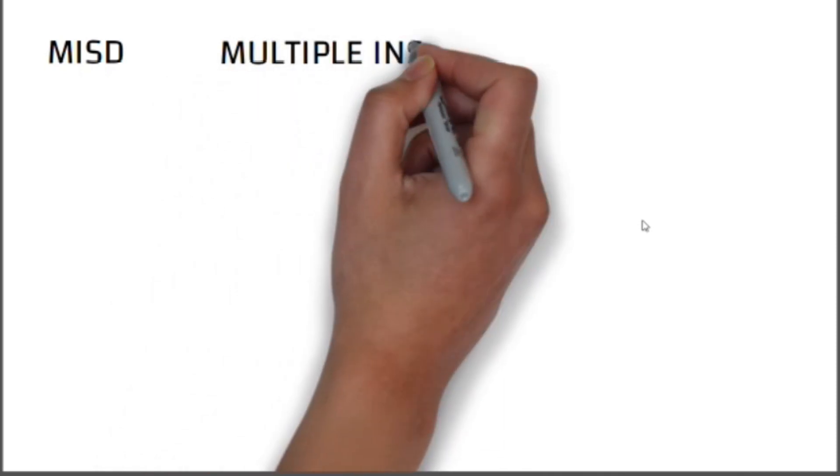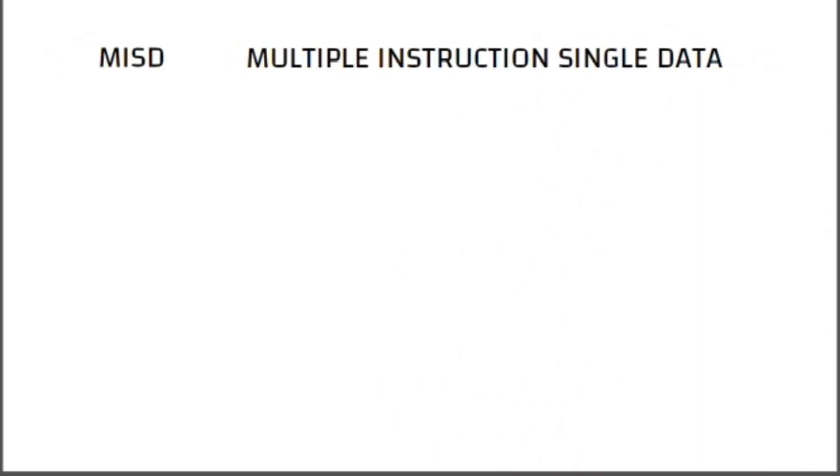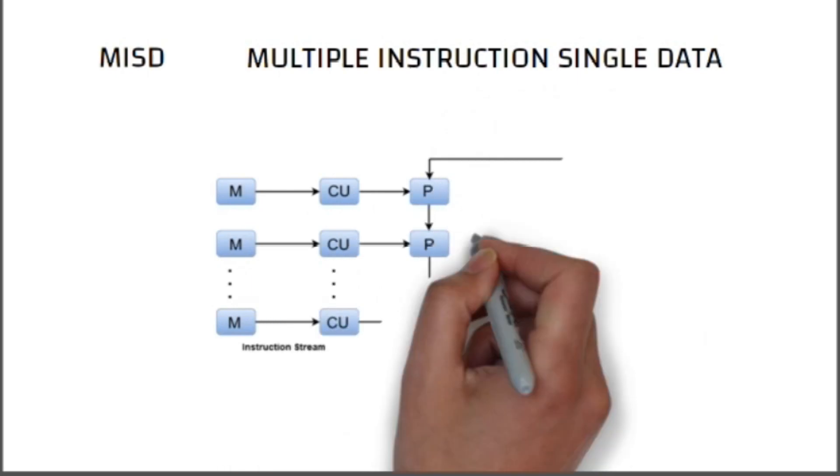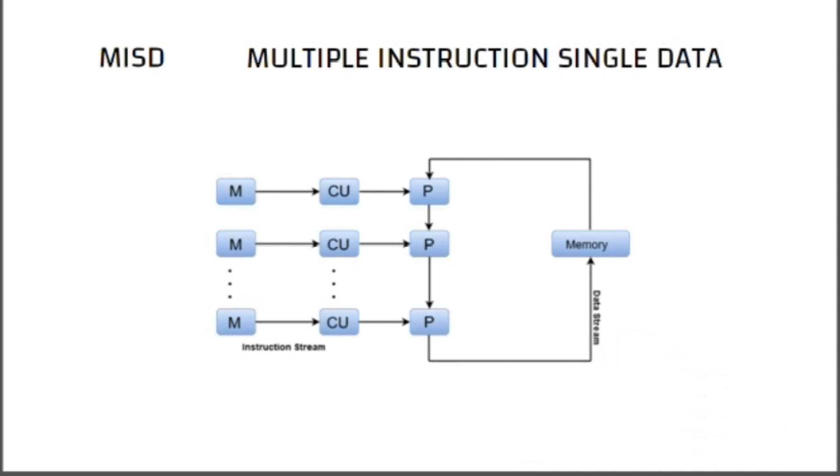Hi guys, myself Heron Thomas, roll number 47, and now I'll explain you about what is MISD. Basically, MISD is Multiple Instruction Single Data scheme. According to the figure given below, there is shared memory divided into memory modules and there are multiple processors.